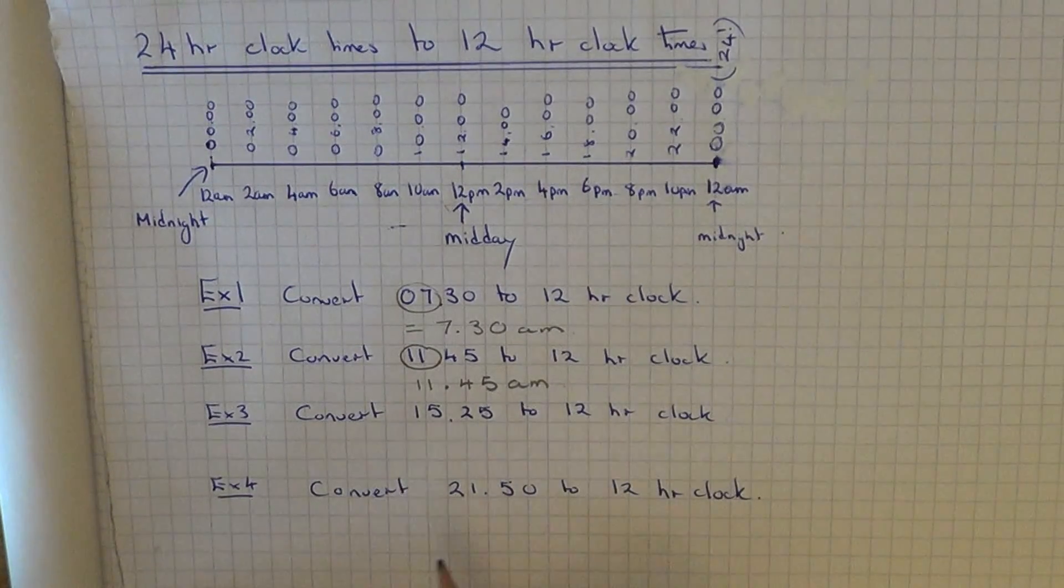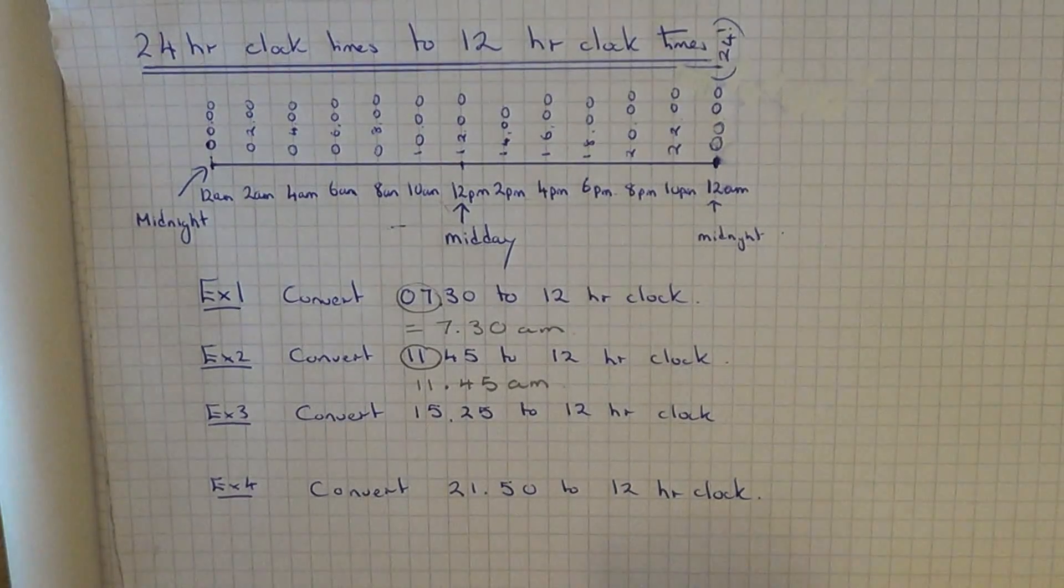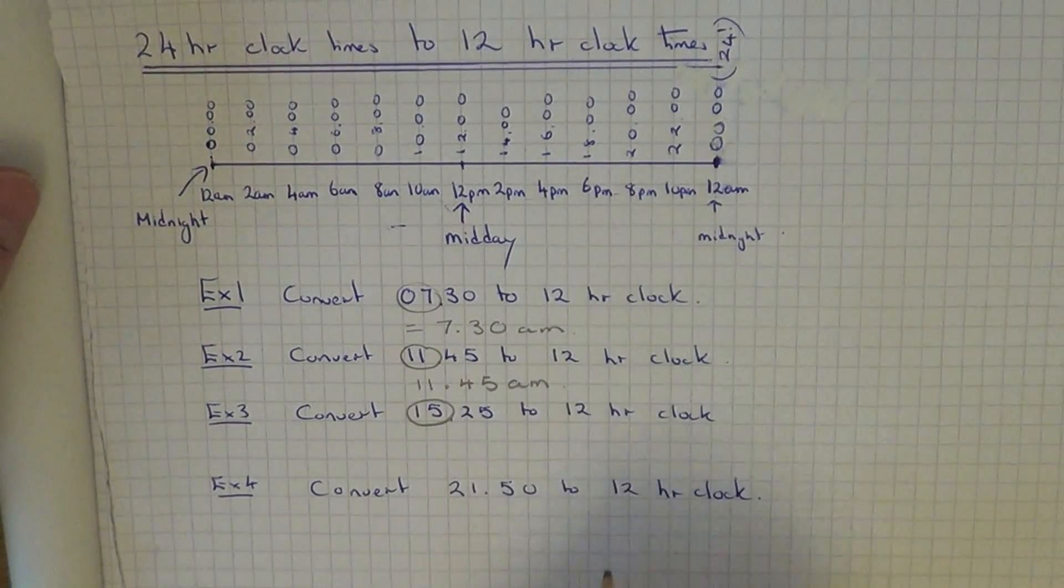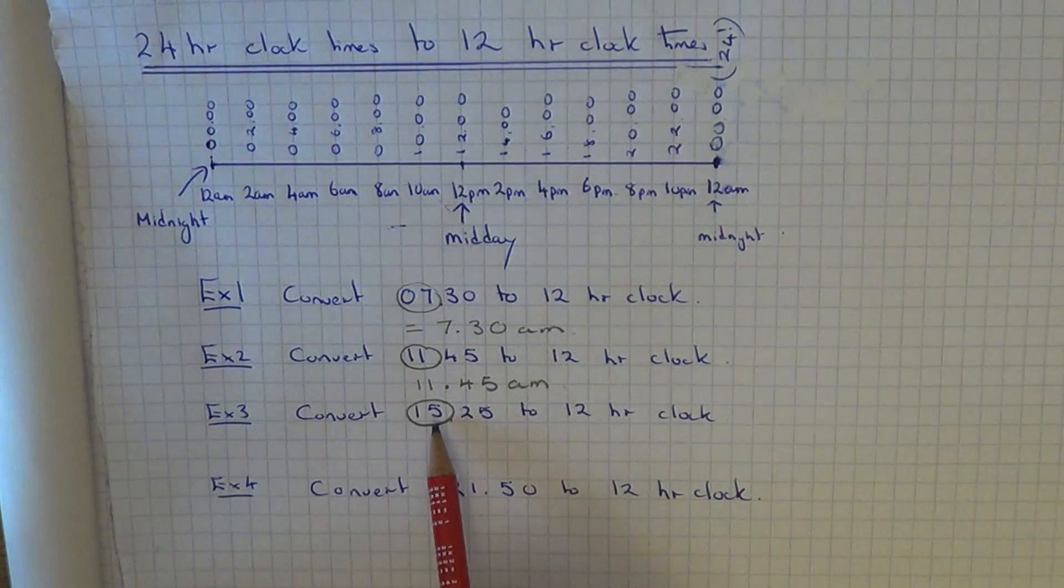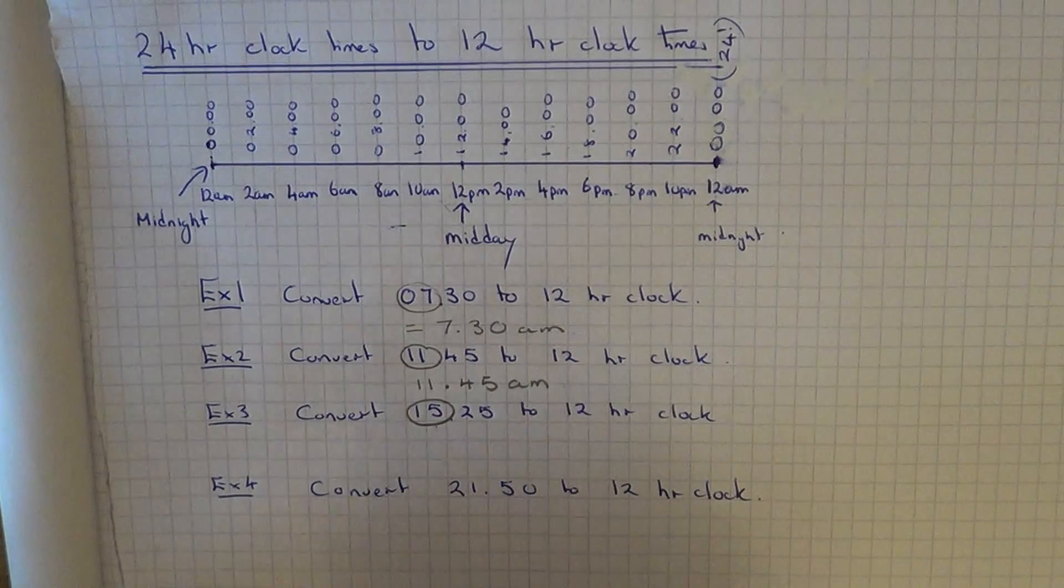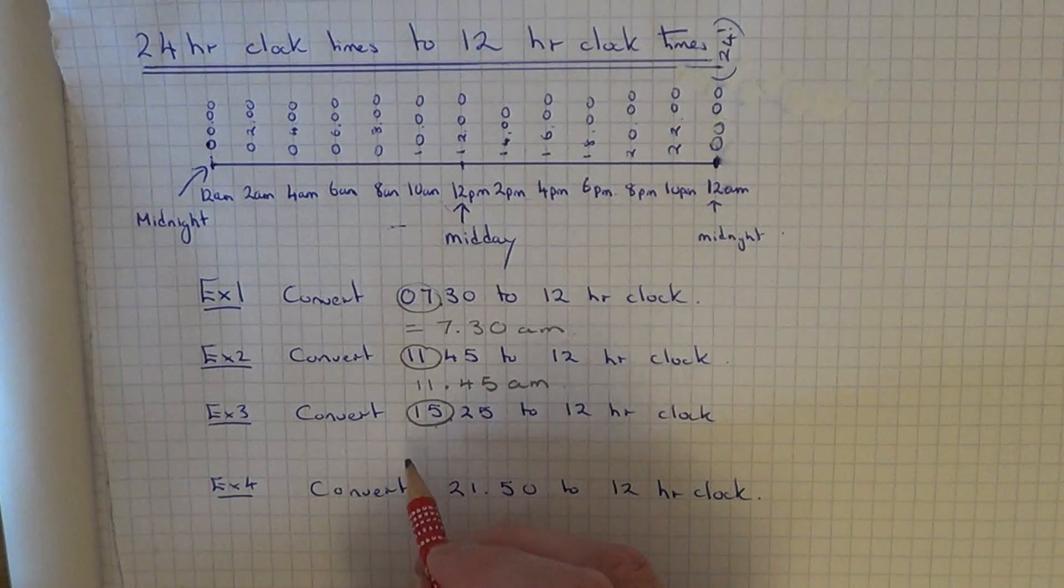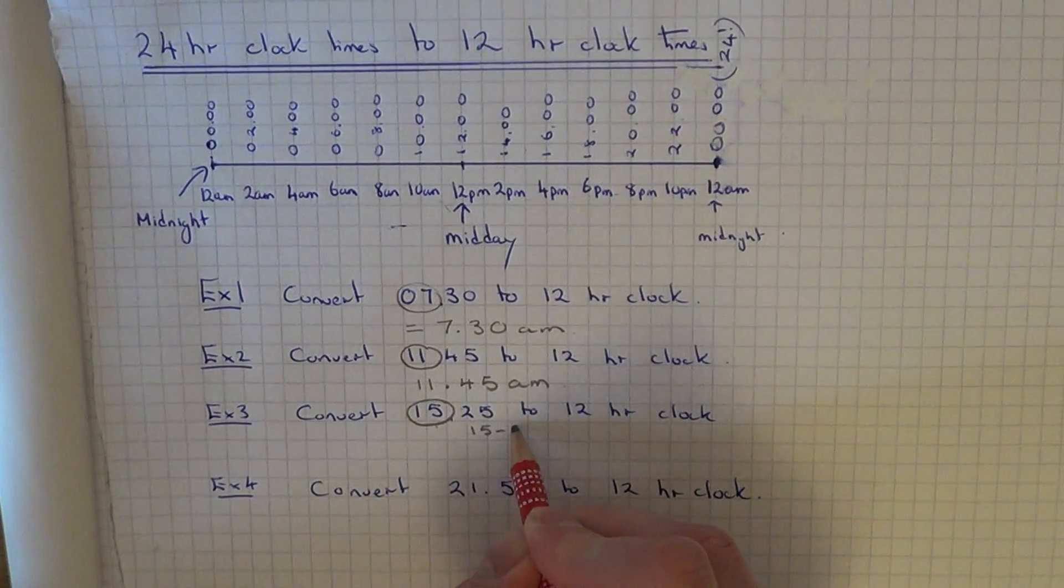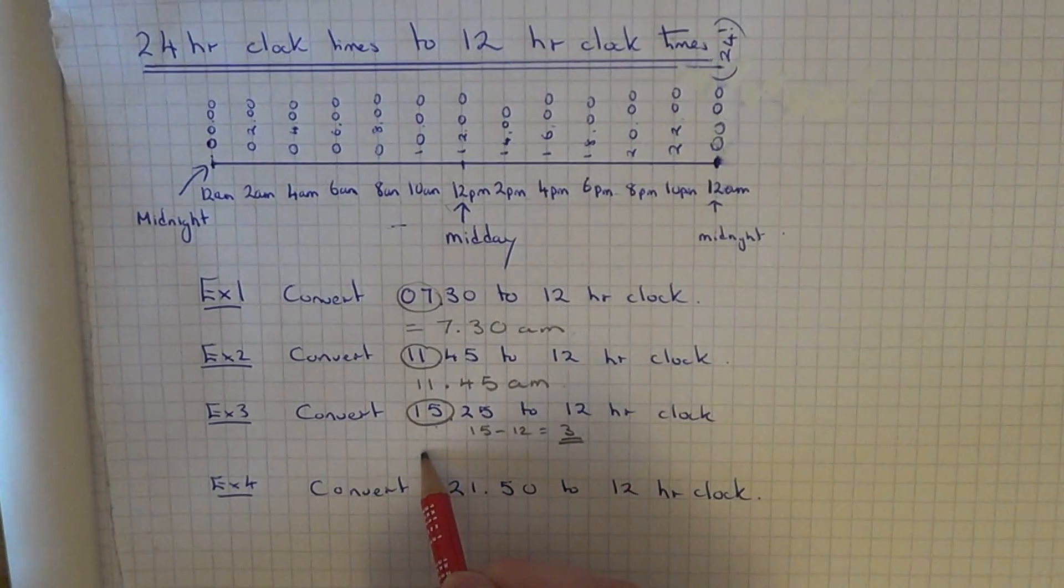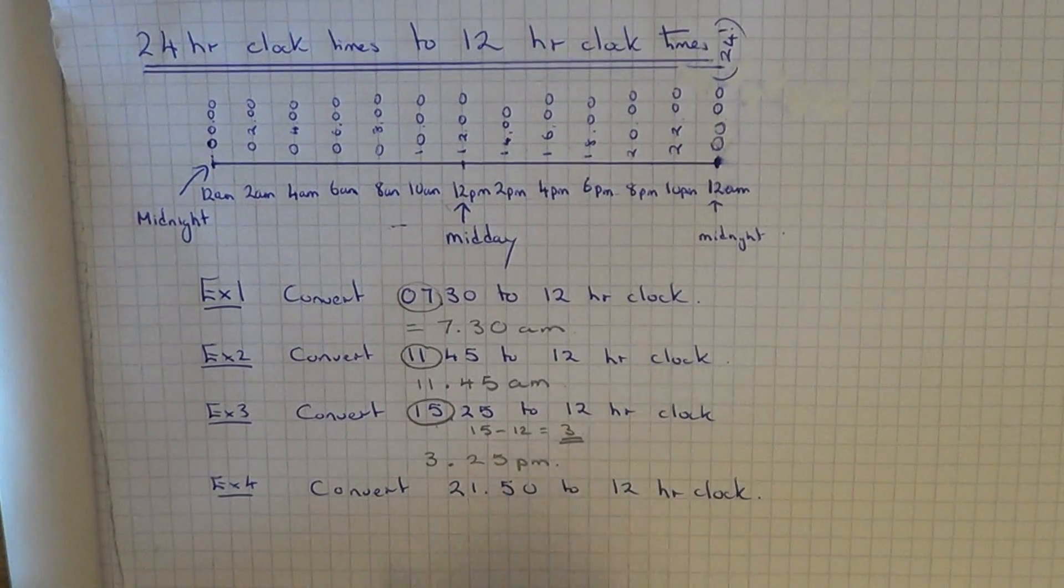Let me move on to example 3. This time we have to convert 15:25 into 12-hour clock. So again, focus on the hour part of our time. This time, if we notice that the hours are past 12, it's bigger than 12, it's 15. So if the hours are bigger than 12, we need to subtract 12 from 15. So 15 take away 12 is 3. Therefore, our time will be 3:25, and make sure you put the PM on at the end.